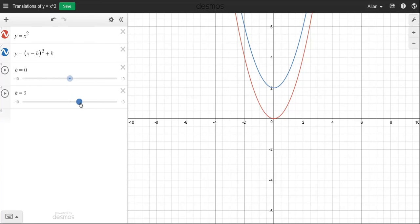So I'm going to make k two. So notice that the bigger k value I make it, the higher the graph. So there's a k value of six. And if I make k negative, it shifts the graph down.